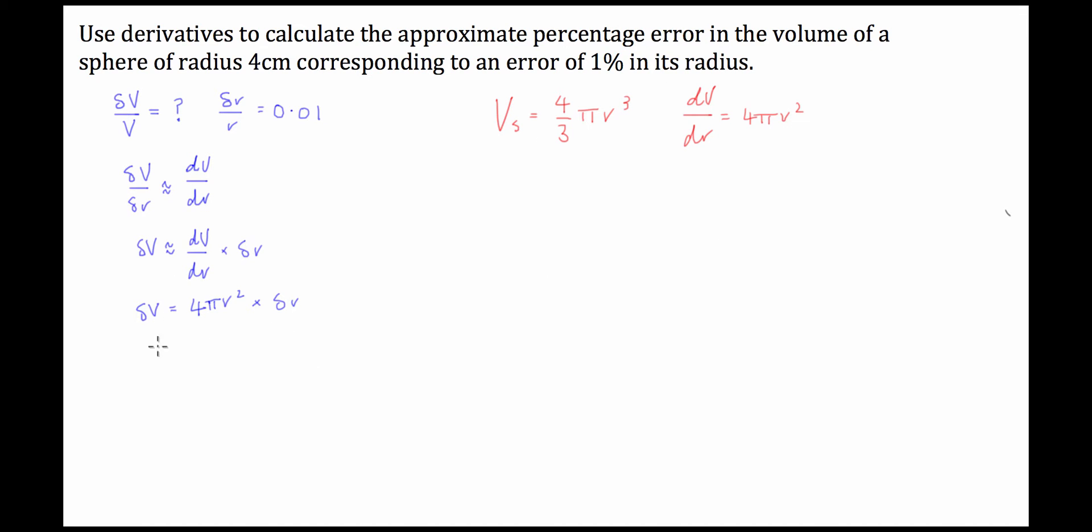So we're getting close to what we need to solve this. So what we have is we have delta v. Now we're looking for delta v over v. Now the way we can get this is we can divide both sides of our equation by v. So we can, I'll change the color so you can see it, we can go this divided by v is equal to this all divided by v. So what you can see is that it's not going to change the outcome of our equality. So from here we can keep this as delta v over v which is what we're looking for.